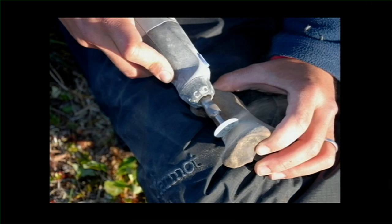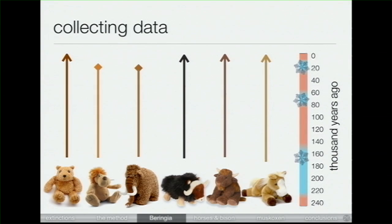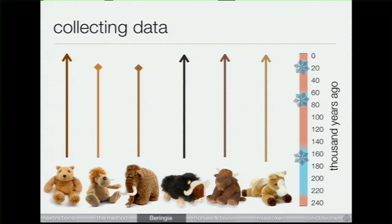We grind them up into powder and take them back to the lab to do our work. Here's a summary of the animals we've been working with: brown bears, lions, mammoths, musk ox, bison, and horses. Some are still surviving and some are extinct. We can sample their DNA from up to about 200,000 years back. I've color-coded the year periods by temperature, with a snowflake indicating an ice age.